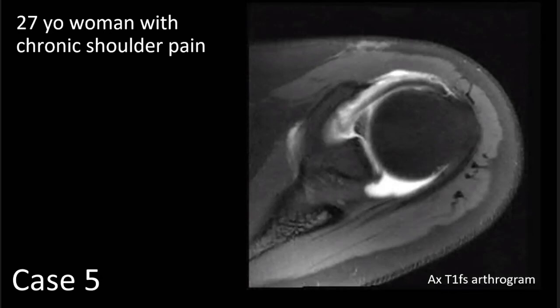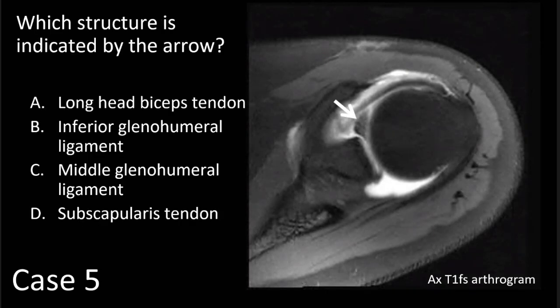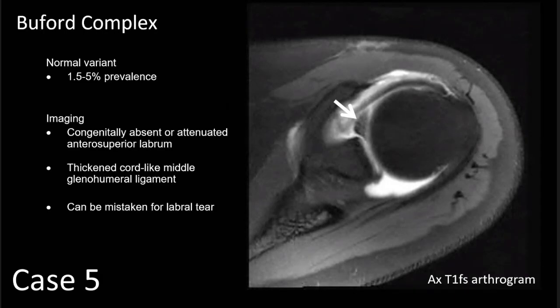Our next case is a 27-year-old woman with chronic shoulder pain. On this axial MR arthrographic image of the shoulder at the level of the coracoid process, superior glenoid, and superior humeral head, we see normal glenoid cartilage and normal posterior labral tissue. But anteriorly, there is a linear plane of contrast separating the bone from a relatively thick triangular-shaped low-signal tissue, indicated by the arrow. The question is: which structure is indicated by the arrow? The answer is the middle glenohumeral ligament. This is a case of Buford complex, a normal variant with a reported prevalence of between 1.5 and 5%. On imaging, you'll see congenital absence or attenuation of the anterior superior labrum and a corresponding thickened cord-like middle glenohumeral ligament.